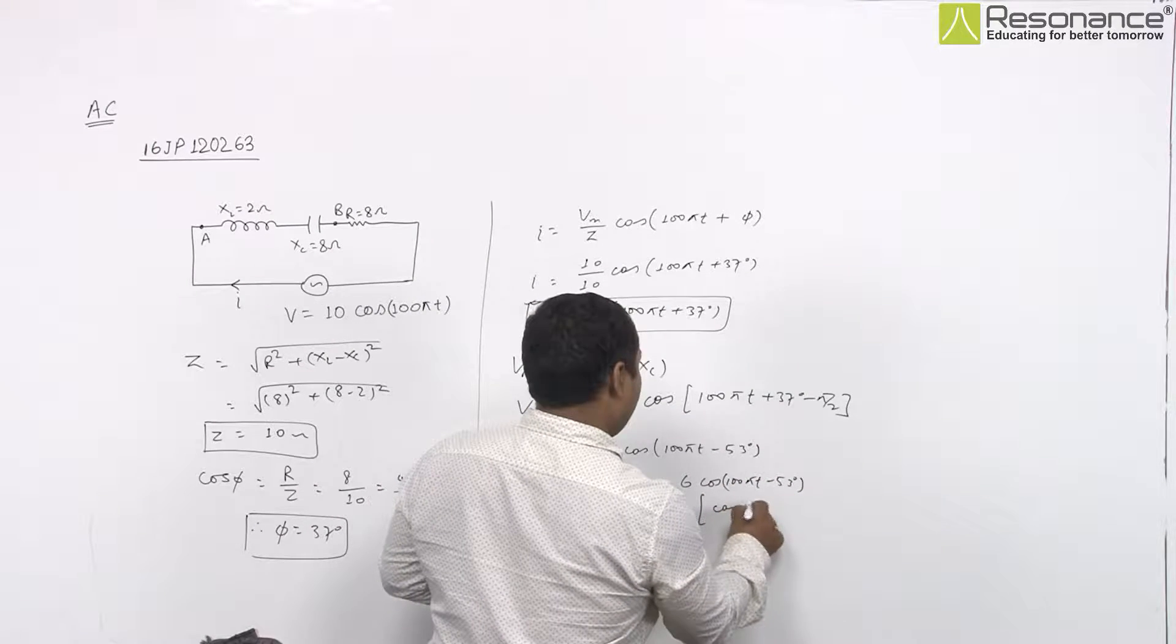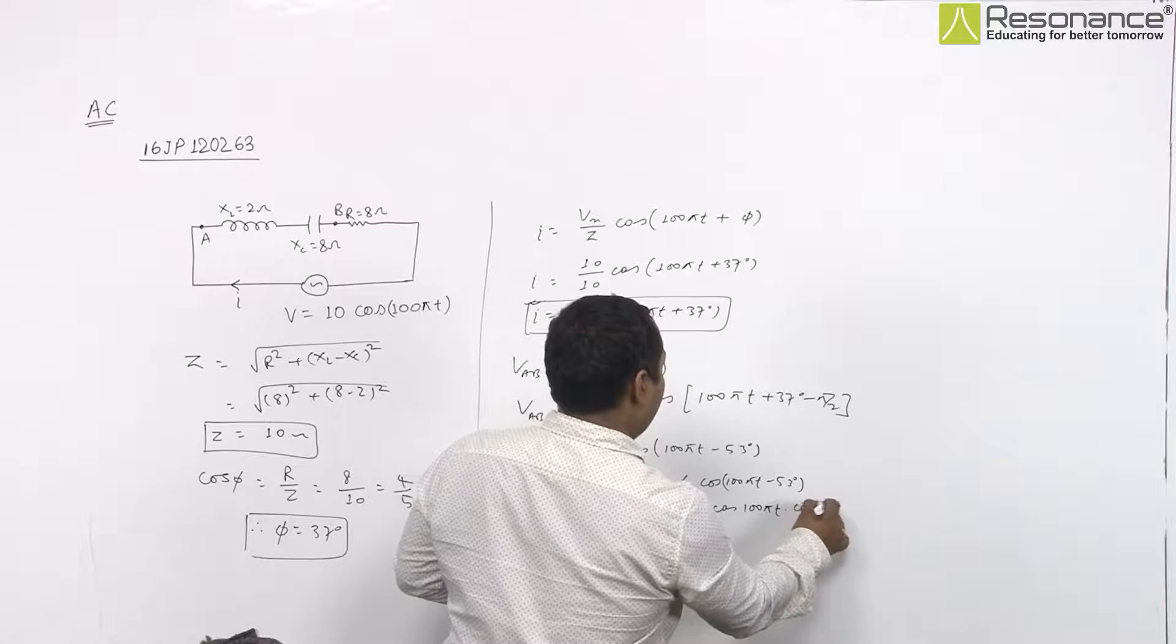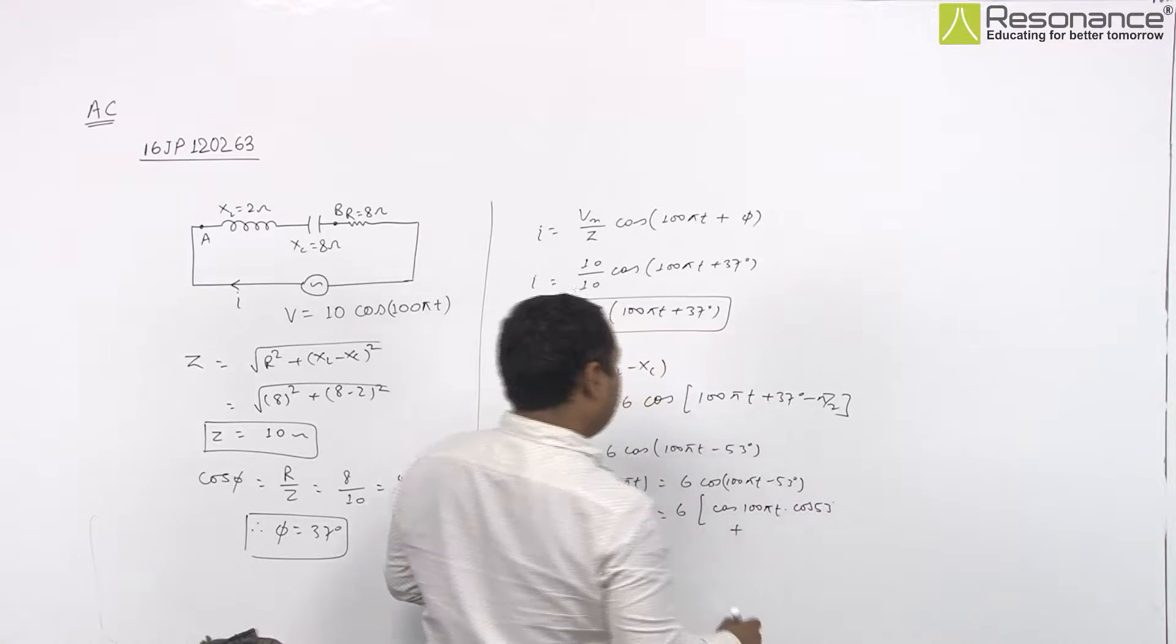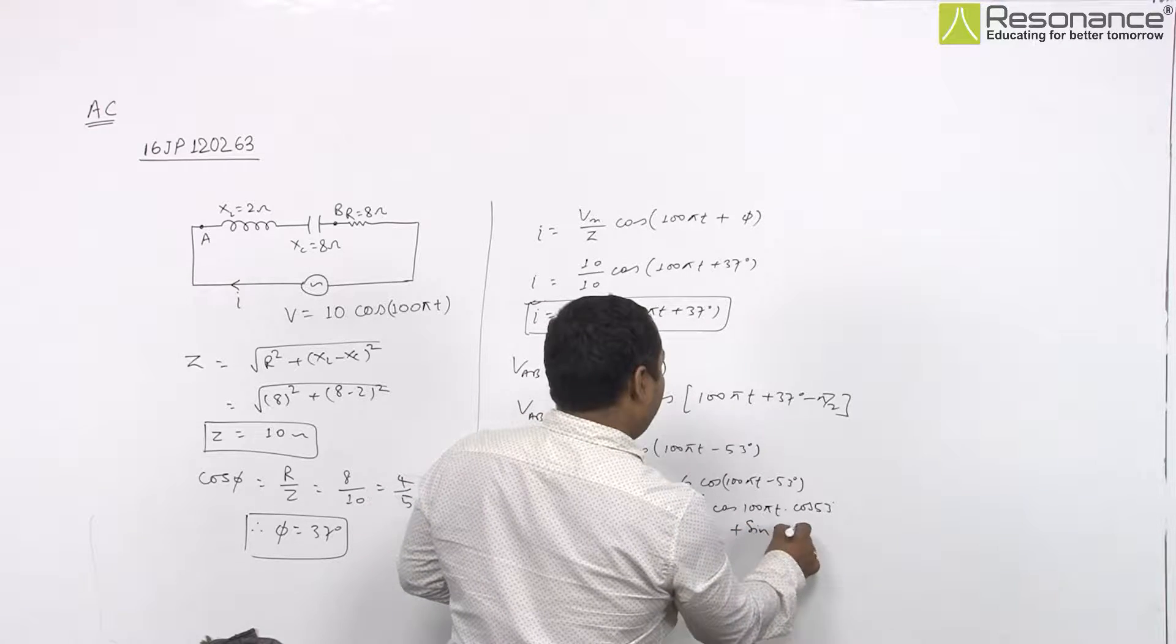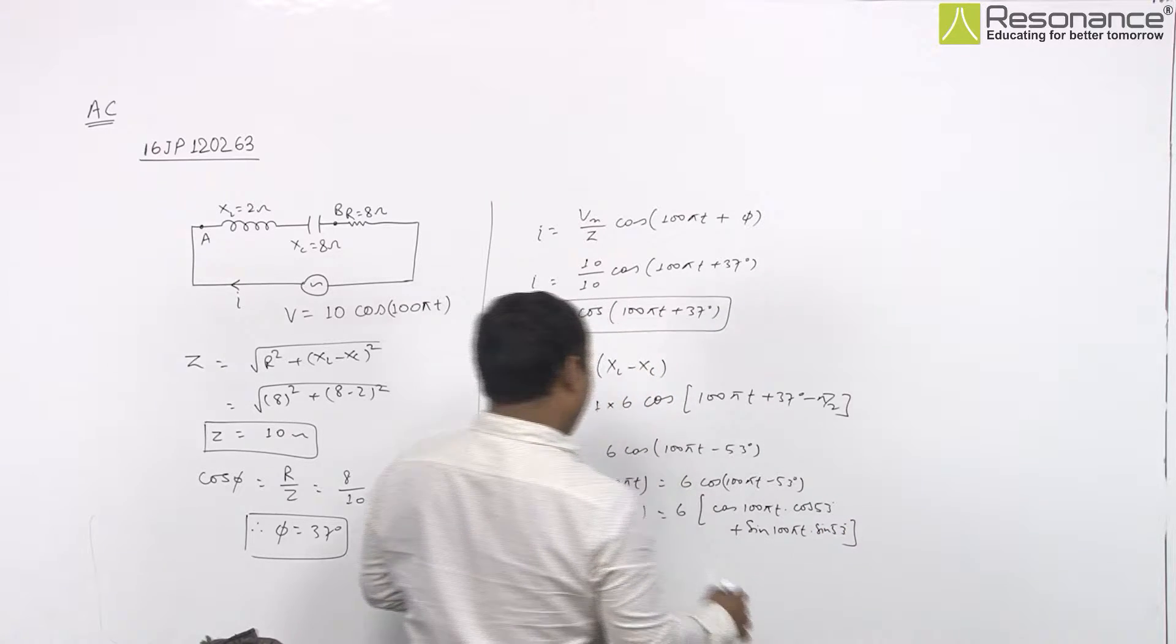So further it will be 6 cos A minus B formula, you can use. So cos of 100 pi T multiplied with cos of 53 degree plus sin of 100 pi T multiplied with sin of 53 degree.